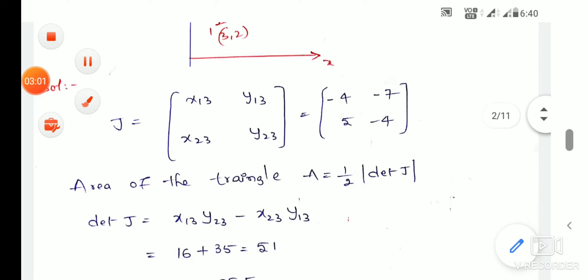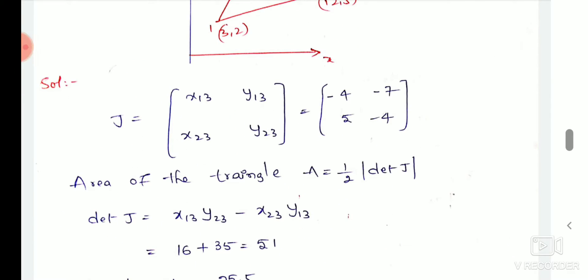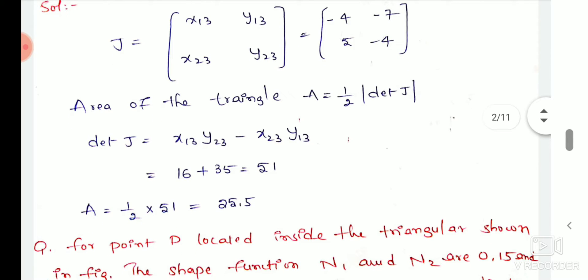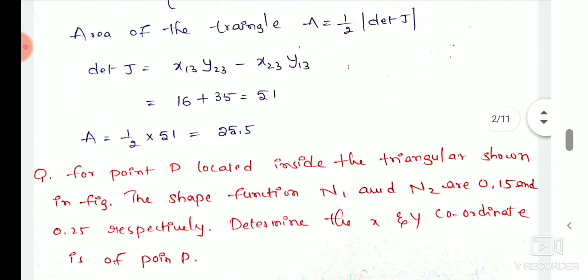So the Jacobian matrix: x13. Then from the formula we will find out this model.